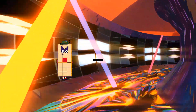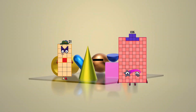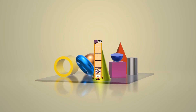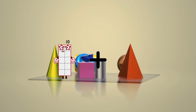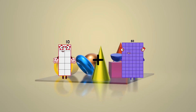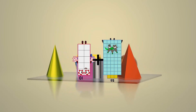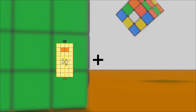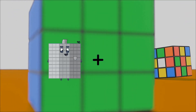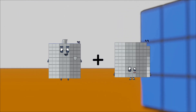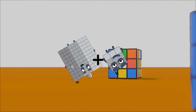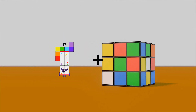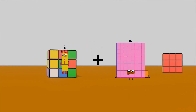Minus 4 equals 3. Plus 53 equals 53. Plus 9 equals 93.